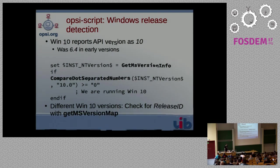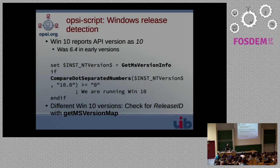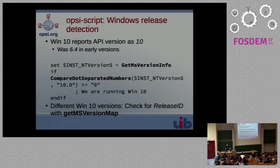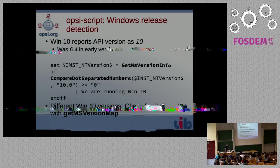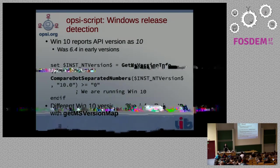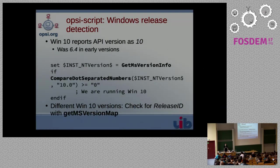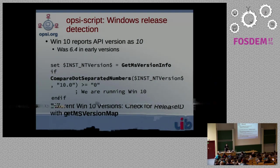Windows 10 also has new challenges for us. Microsoft says it's one system and you won't see differences — it will be the last Windows ever released — but internally they have different releases. You can check for this release ID with the function mentioned, because of course they changed the underlying APIs between these versions and you will need to handle that.